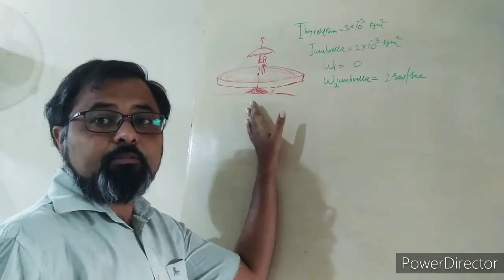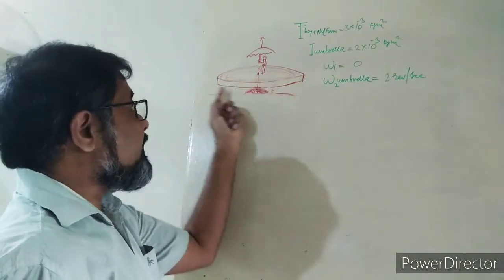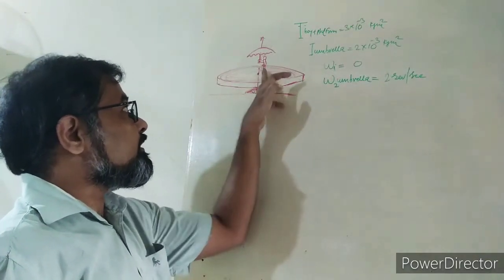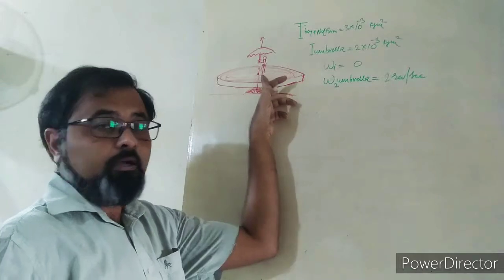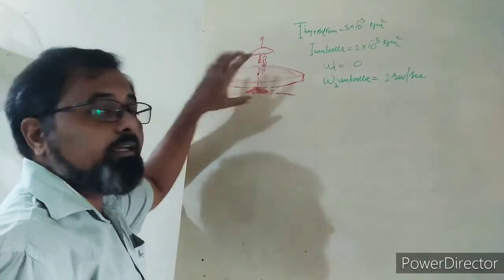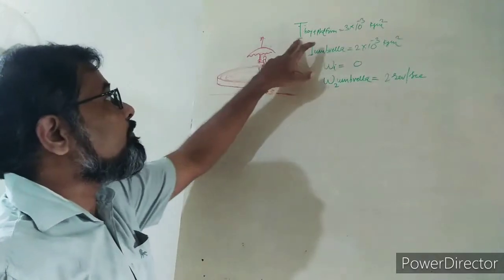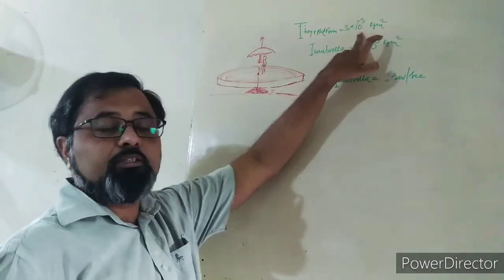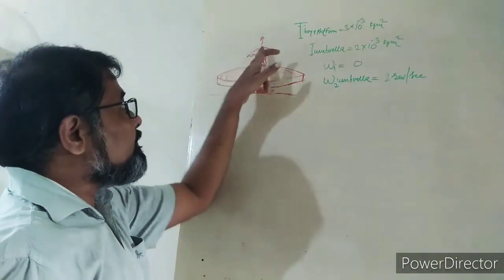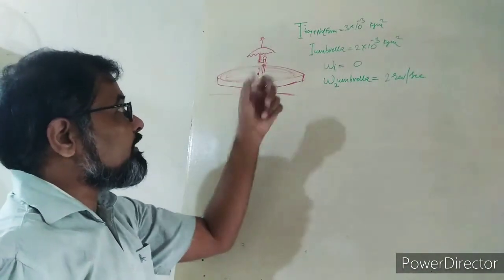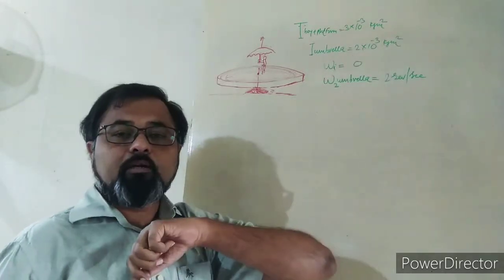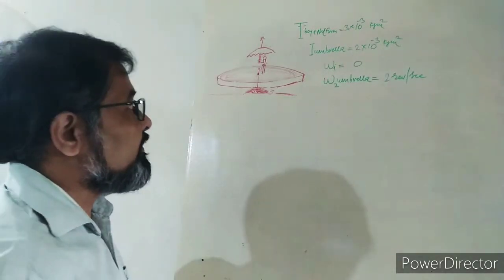This is the system. This is the platform which is able to rotate. A boy is standing on this platform. The moment of inertia of the boy plus platform system is 3 x 10⁻³ kg·m². The umbrella has a moment of inertia of 2 x 10⁻³ kg·m².